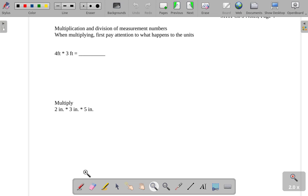So if we take 4 feet times 3 feet, well, 4 times 3 is 12, but we would also get feet times feet. And usually, it's kind of cumbersome to write feet times feet, so usually we'd write feet squared.